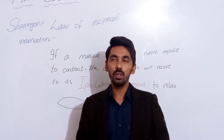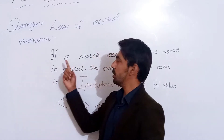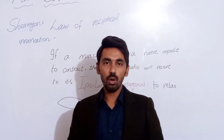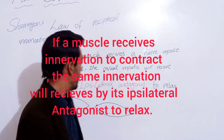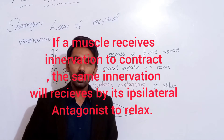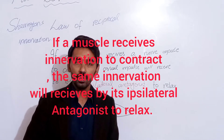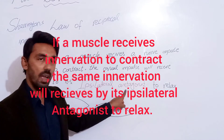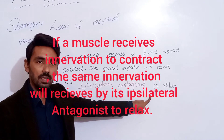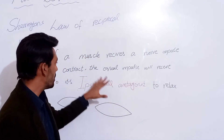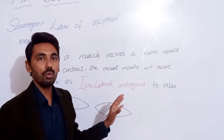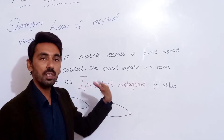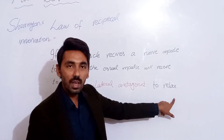In this video we will discuss Sherrington's law of reciprocal innervation. According to Sherrington, if a muscle receives any nerve impulse from the central nervous system, its ipsilateral antagonist will receive the same innervation to relax. So if a muscle receives a nerve impulse to contract, its ipsilateral antagonist will receive the same innervation to relax.